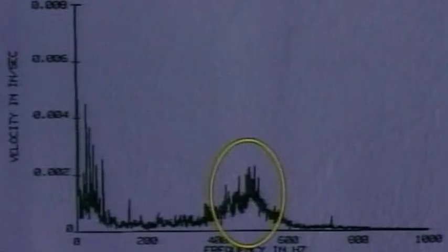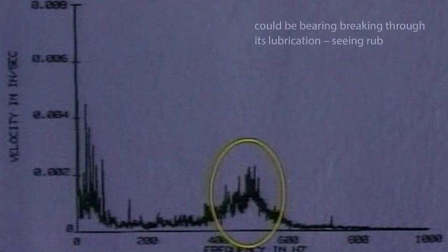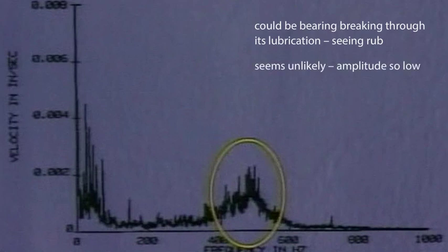We also find a family of peaks around 500 Hz. Now, there are a couple of things this could be. First, it could be that the bearing is breaking through its lubrication, and we are seeing rub. This seems unlikely, however, because the amplitude is so low. Second, this pattern is often associated with pump cavitation.